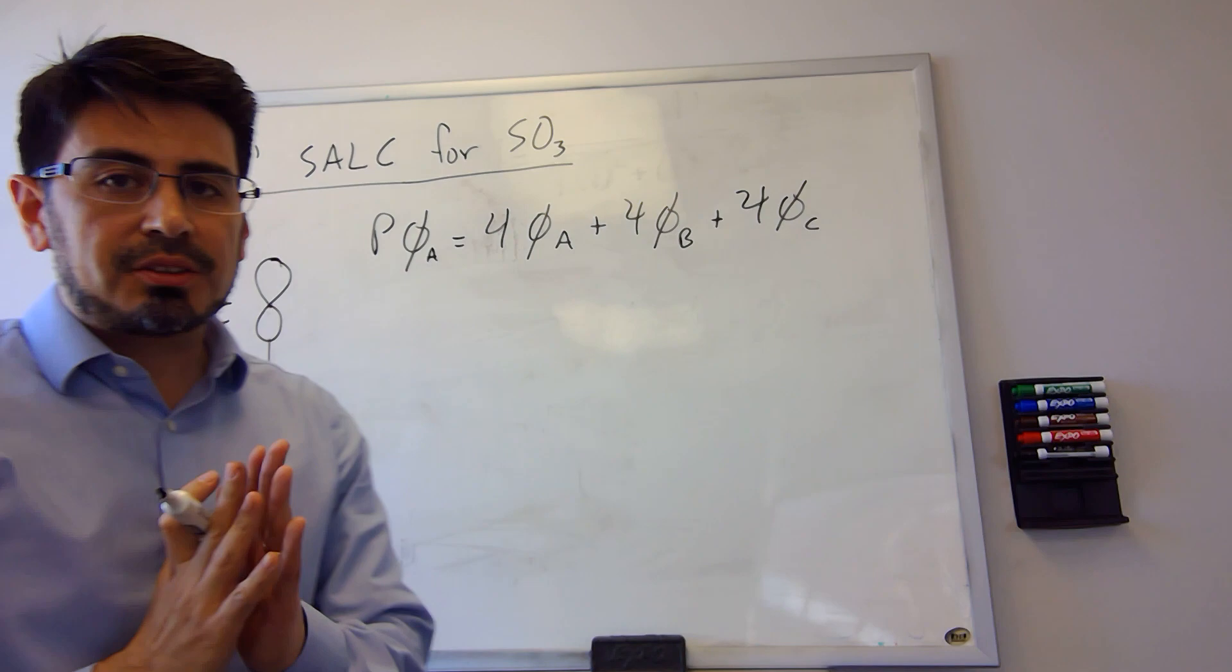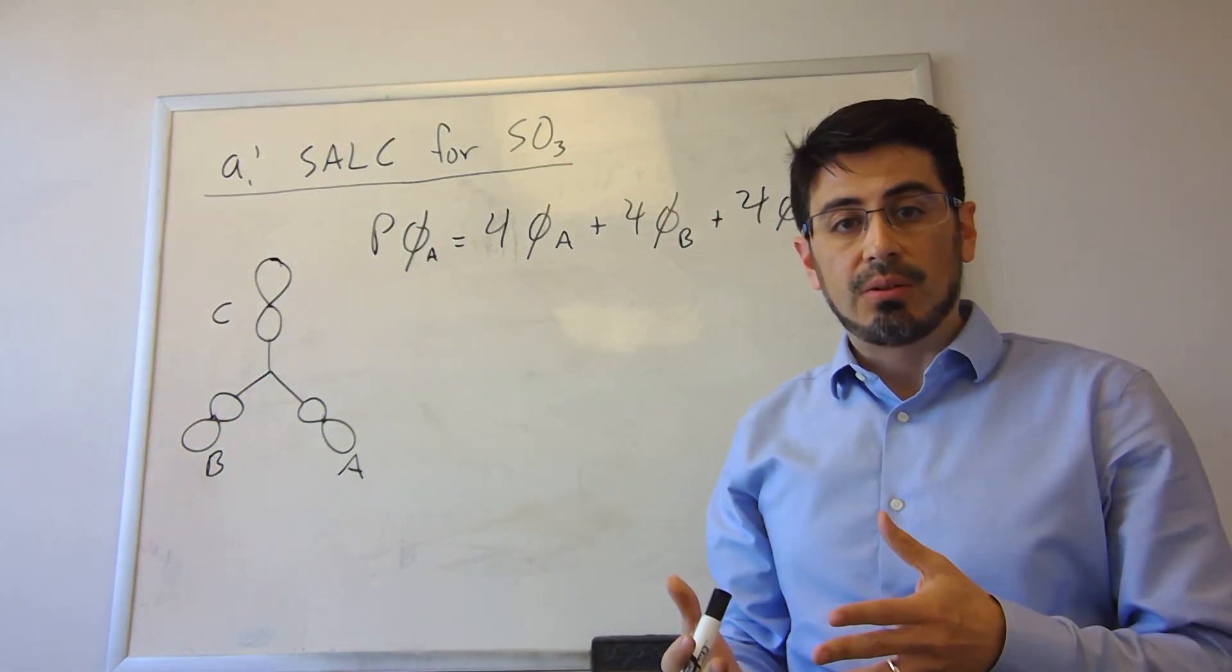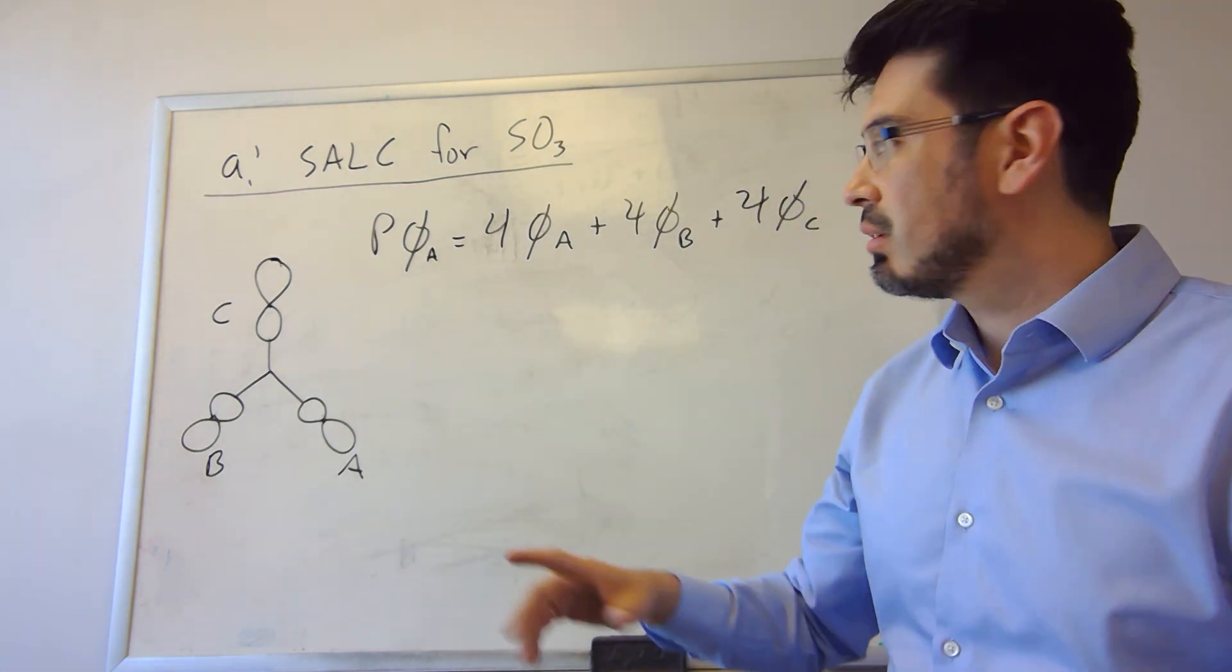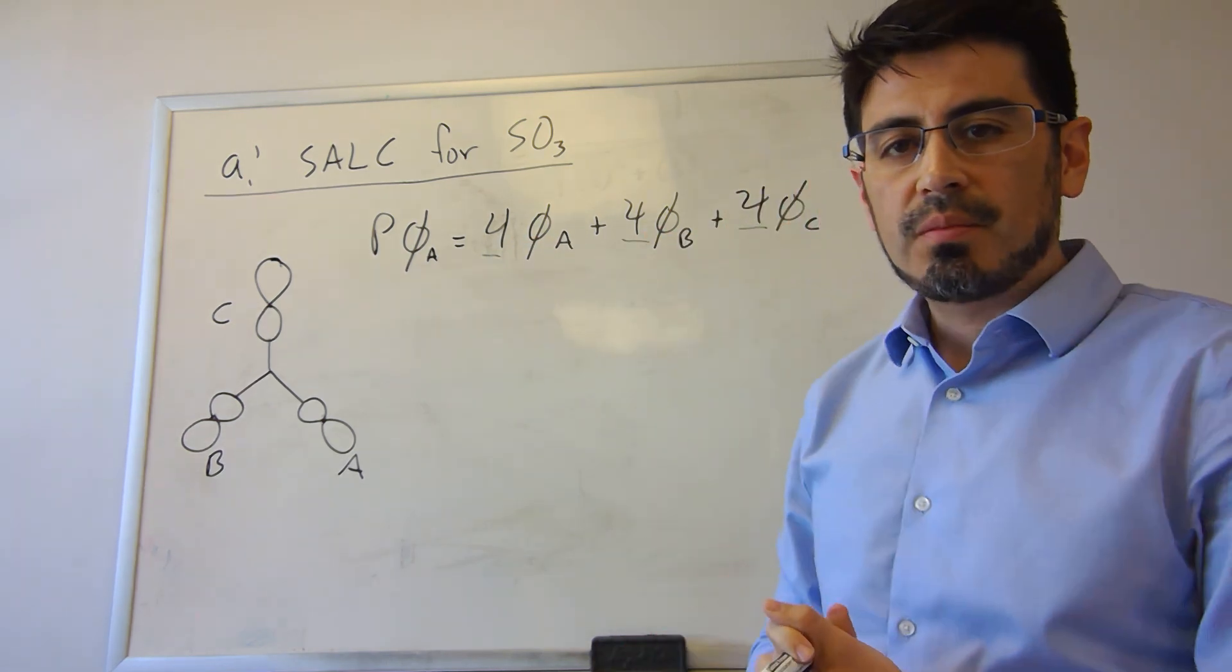What you must do now is find the simplest form of this wave function and normalize it. So first of all, you get rid of the common denominator. In this case, 4. So you divide by 4.